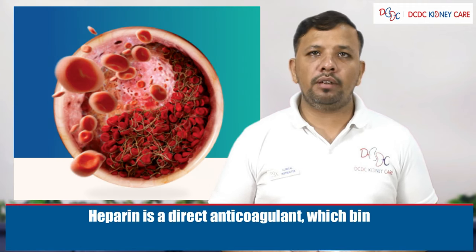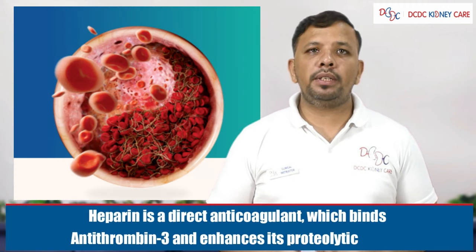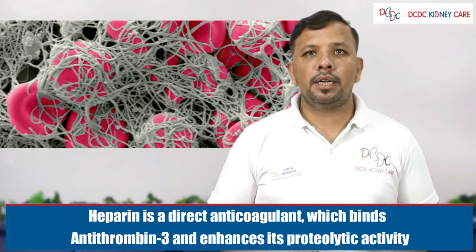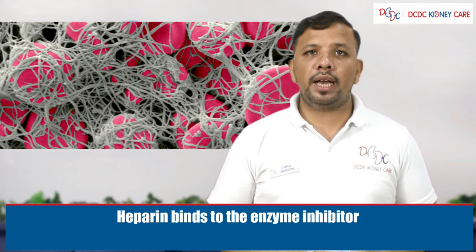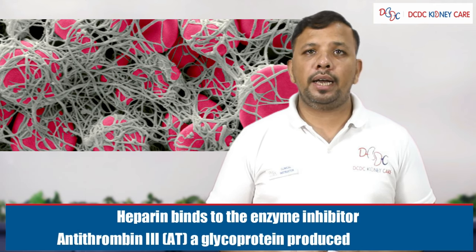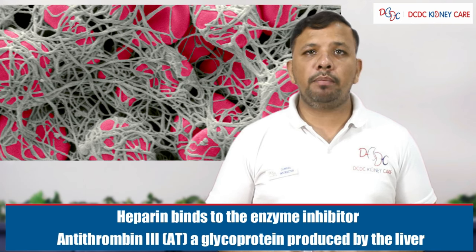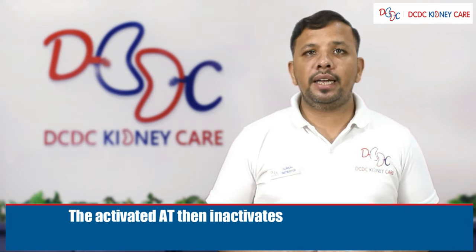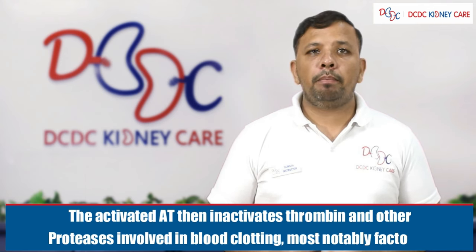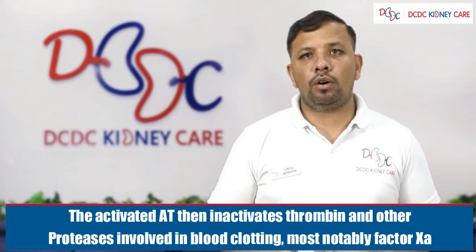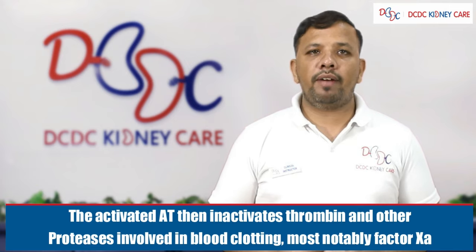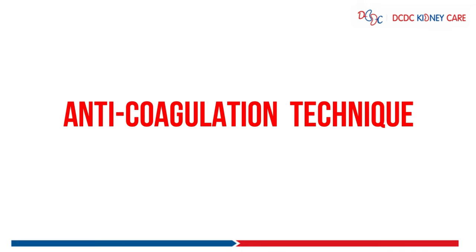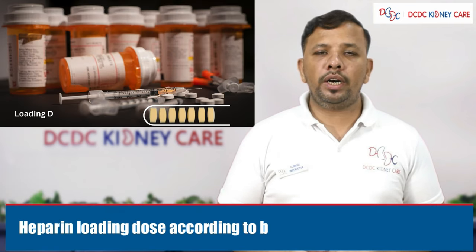Regarding the mechanism of action: heparin is a direct anticoagulant which binds antithrombin 3 (AT3) and enhances its proteolytic activity. Heparin binds to and inhibits antithrombin 3, a glycoprotein produced by the liver. The activated AT3 then inactivates thrombin and other proteases involved in blood clotting, most importantly Factor Xa.